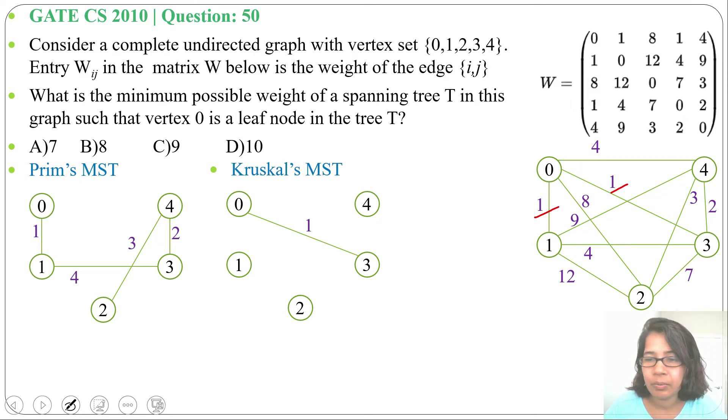Next, we cannot use 0 to 1, as if we choose 0 to 1 then vertex 0 degree will be 2, then it will not be a leaf. We want to make 0 as a leaf, so its degree will be 1, meaning just one edge can be adjacent. Next weight 2, that is 3 to 4. Next weight 3, that is 4 to 2. Next weight 4, that is 3 to 1.